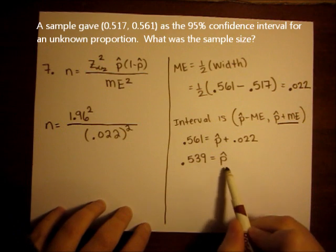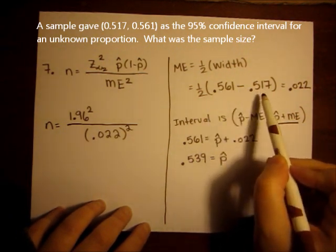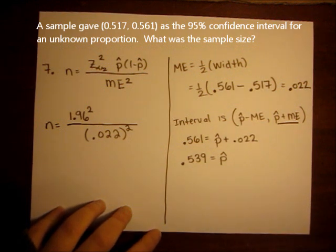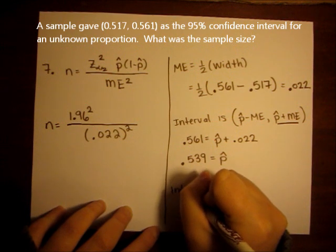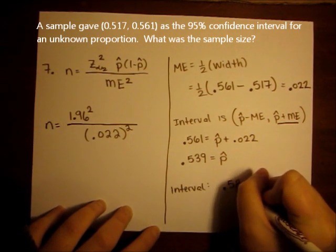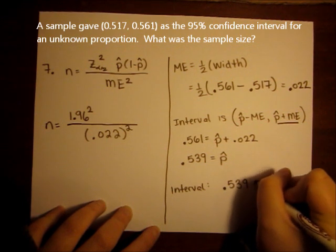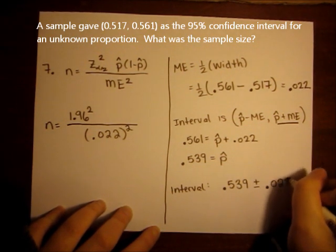Notice I could have also found p hat by taking the average of the two numbers, of the low number and the high number, because p hat is always in the middle of the interval. So my interval is really 0.539 or p hat plus or minus my margin of error, plus or minus 0.022.